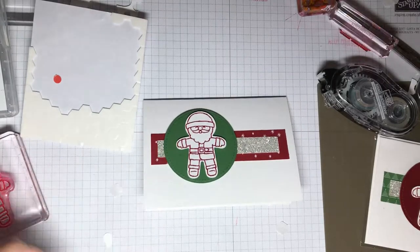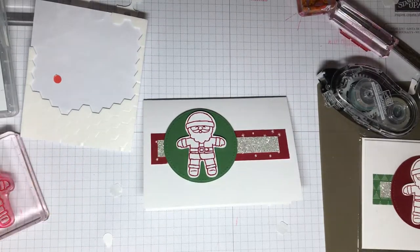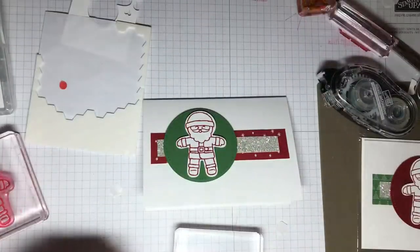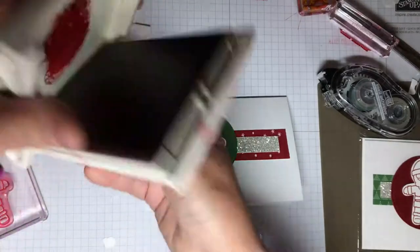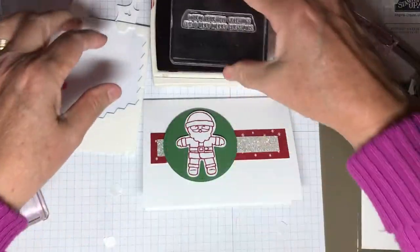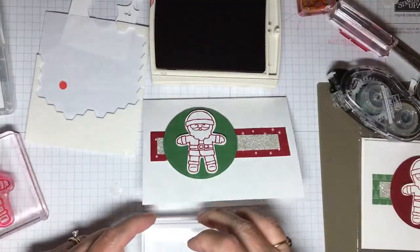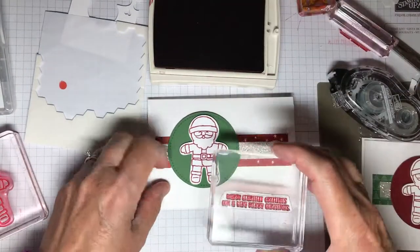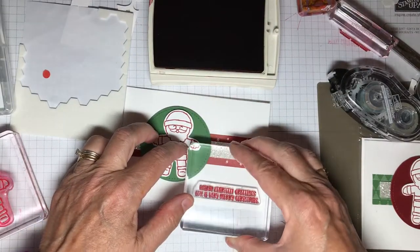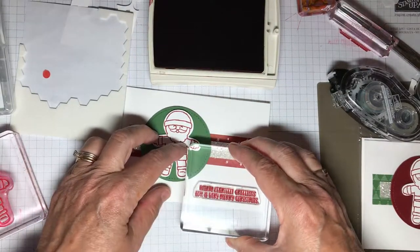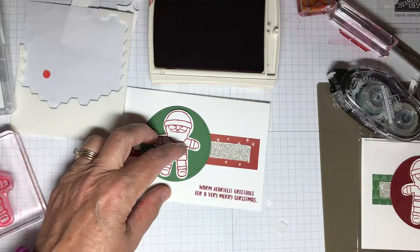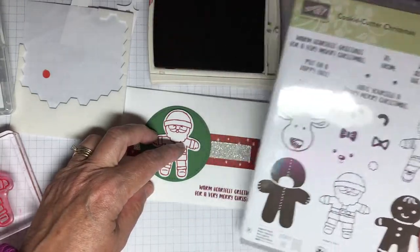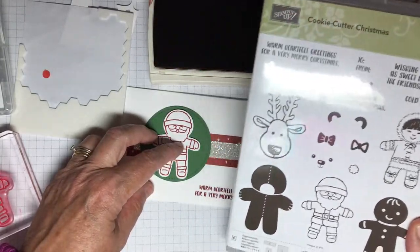We do want to add here at the bottom, a sentiment. And I pulled out the one that says, we need that cherry cobbler again. Let's see what it says when we stamp it. I'm just going to, since this is the first time I'm using it, I'll be setting it down there. So it says, warm heartfelt greetings for a very Merry Christmas. And that comes right in this stamp set so you don't have to buy another stamp set.